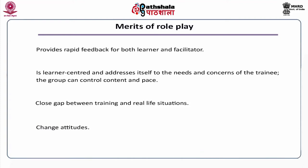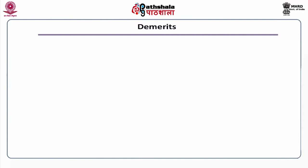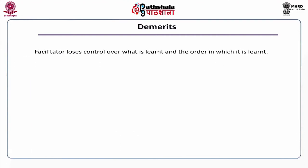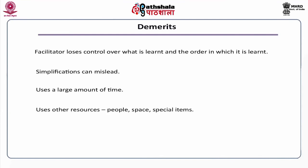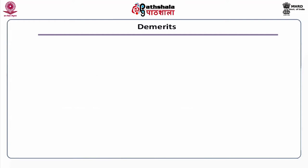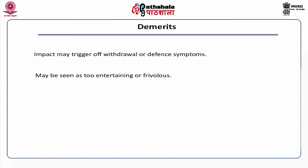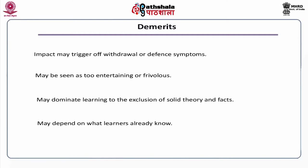Role play also brings about attitudinal change. The demerits of this method are: the facilitator loses control over what is learnt and the order in which it is learnt; simplifications can mislead; it uses a large amount of time and other resources; it depends on the quality of facilitator and learner; its impact may trigger withdrawal or defense symptoms; sometimes it may be seen as too entertaining or frivolous; it may dominate learning to the exclusion of solid theory and facts; and it may depend on what learners already know.